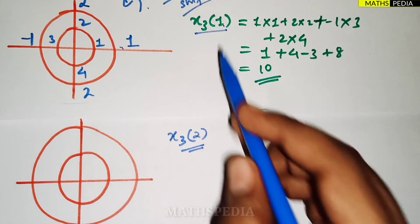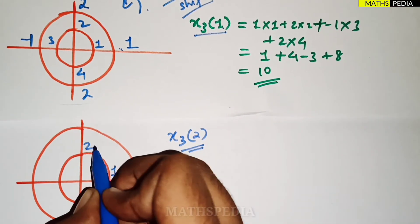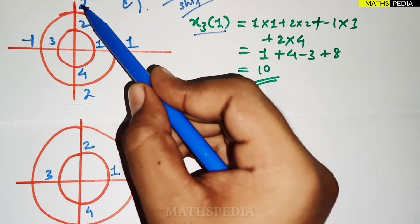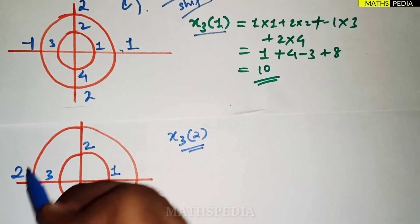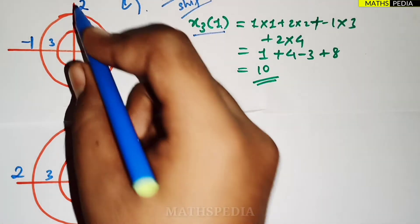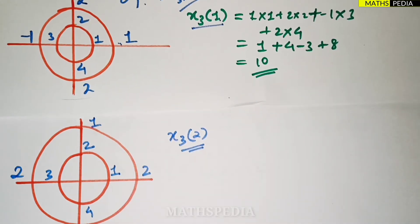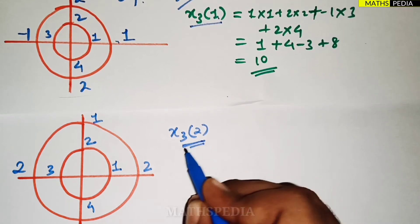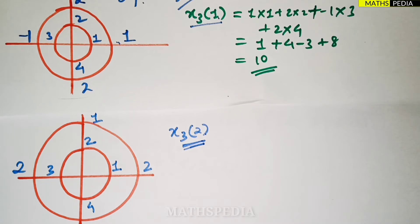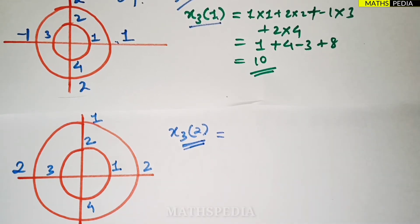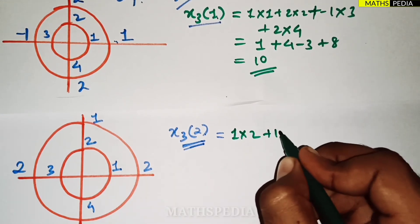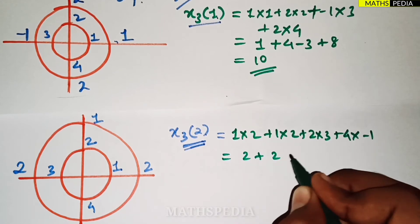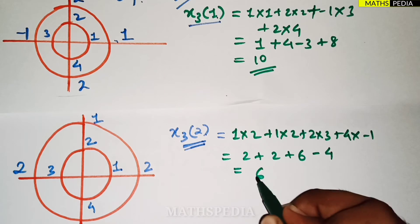For x3(2), the first sequence remains fixed: 1, 2, 3, 4. Shift the second sequence one more position anti-clockwise: 2 comes here, -1 here, 2 there, 1 there. Multiply: 1×2 + 2×2 + 3×1 + 4×(-1) — wait, let me recalculate: 1×2 + 1×2 + 2×3 + 4×(-1) = 2 + 2 + 6 - 4 = 6. So x3(2) = 6.